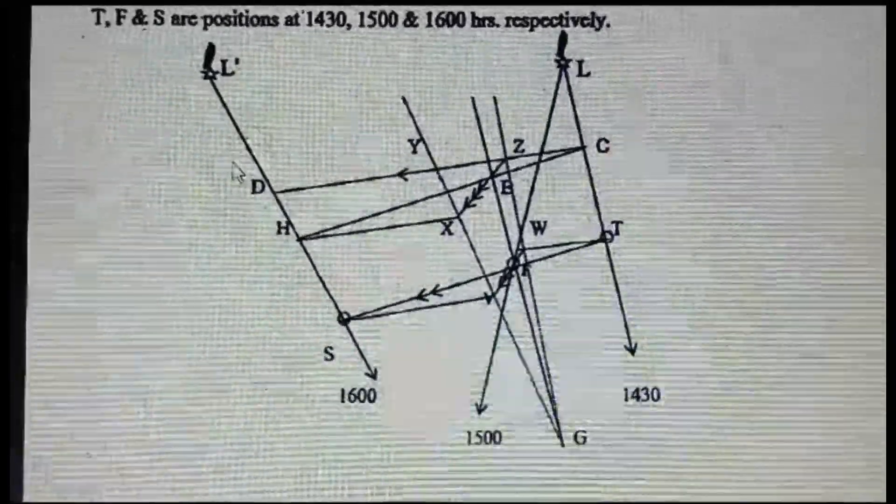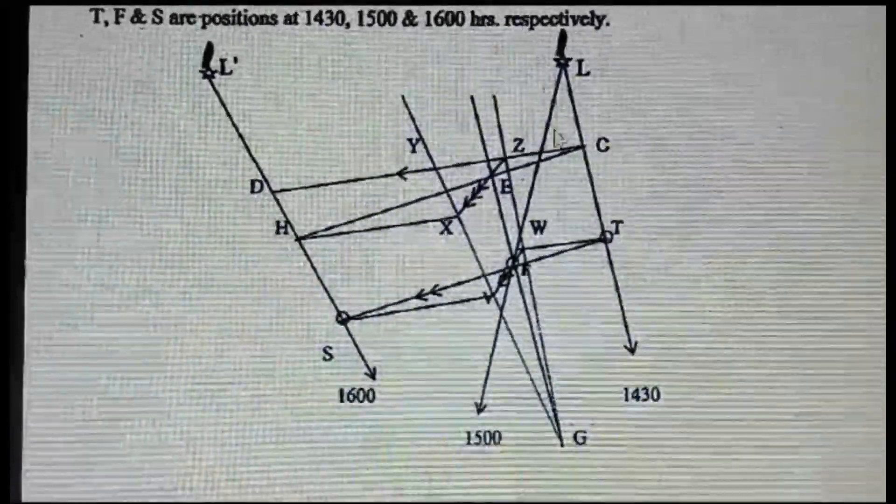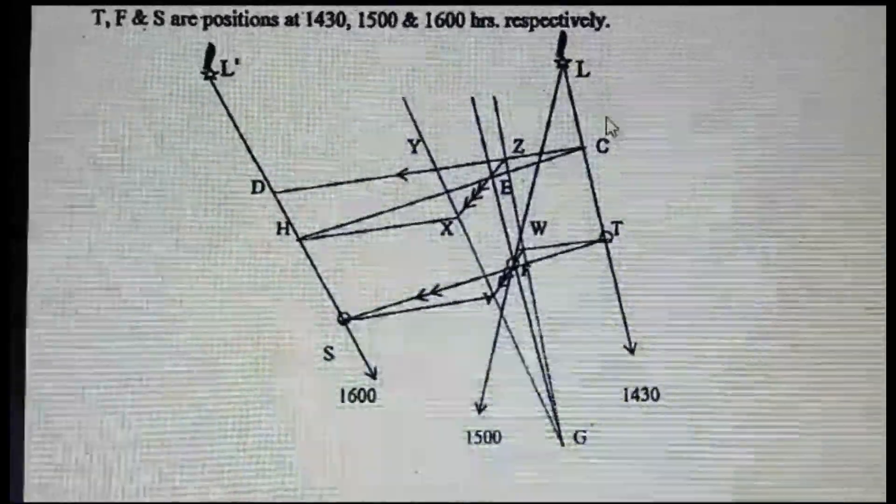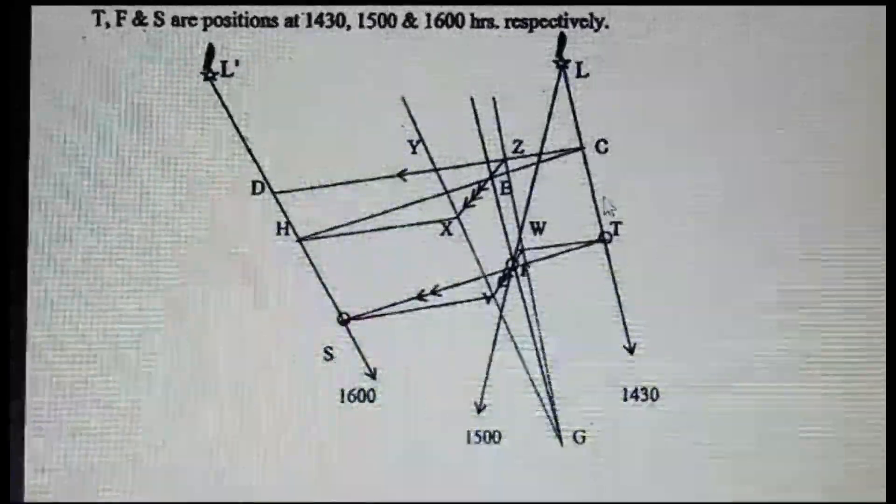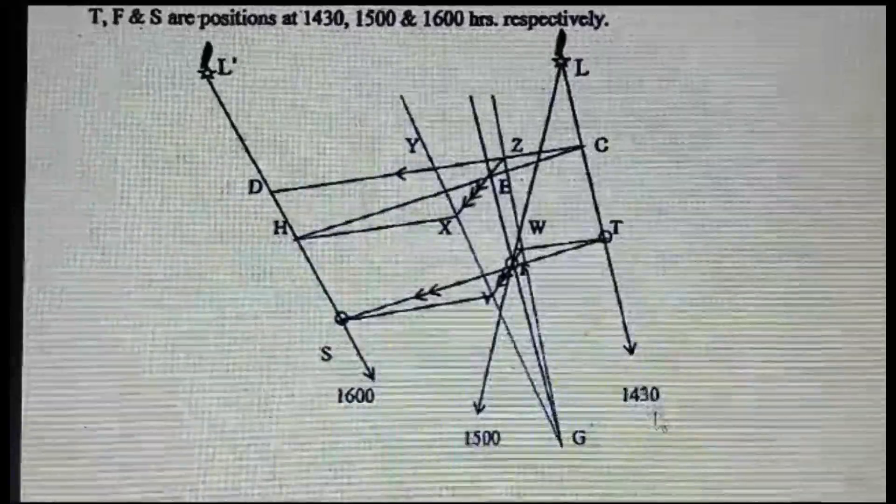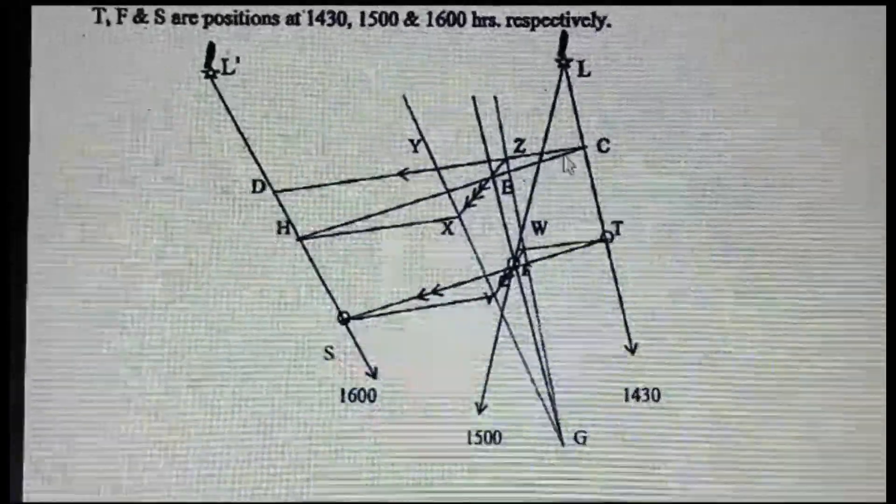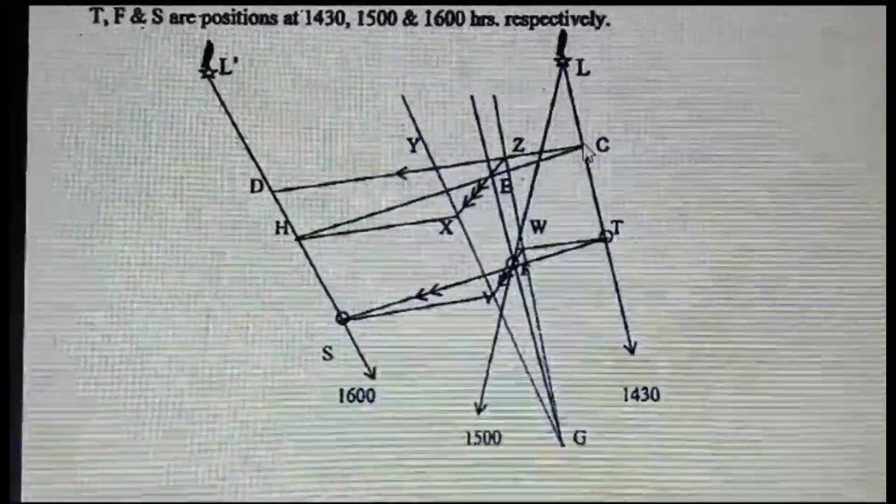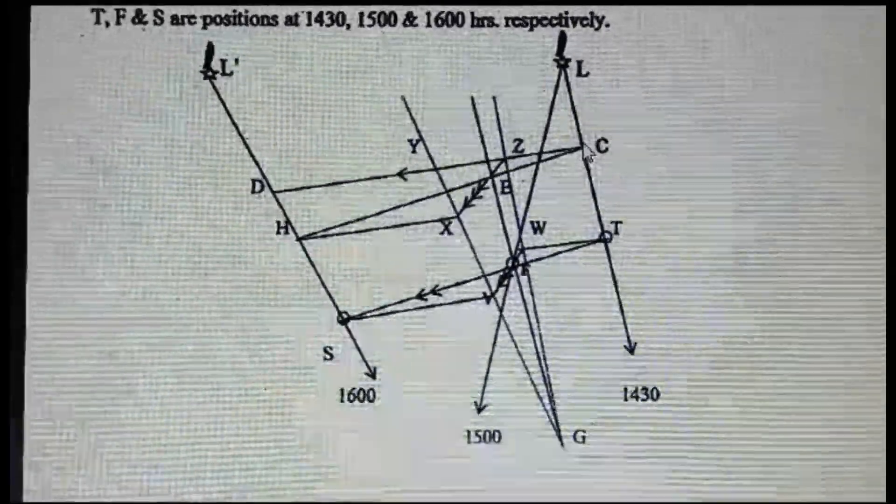Now, at any point on this 1430 bearing, assume you are anywhere on this line. So let's assume that we are at point C. You can take here, you can extend this line more and go more down, that doesn't matter. So now I had taken point C. Now what I have to do is, here, second thing you know about running fix and other numericals: if course is given, we'll draw the course.